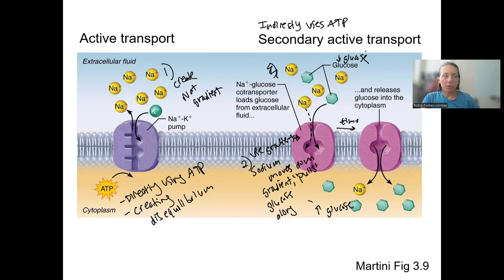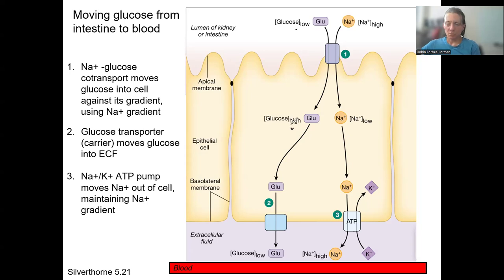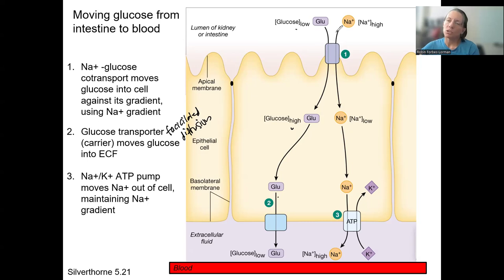This is particularly useful when moving glucose from the intestine to the blood. We've got glucose that we've eaten, but despite that, glucose is low inside the lumen of the intestine — the space of the intestine — compared to inside the cell. This allows glucose to move freely from inside to outside the cell via facilitated diffusion (number two), using a glucose transporter moving glucose into the ECF. But how do we get glucose from the lumen of the intestine into the cell when it's going against this gradient? The co-transporter can pull glucose along with sodium because sodium is high outside the cell and low inside the cell, so glucose can move along with it via this sodium-glucose co-transporter.